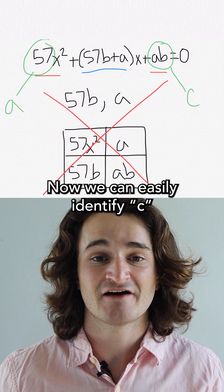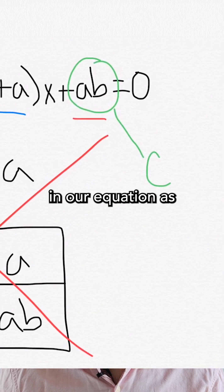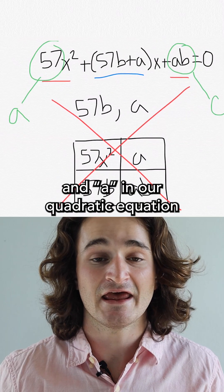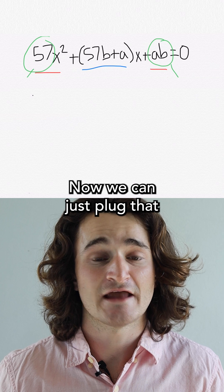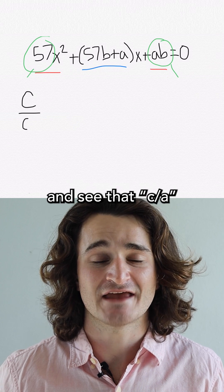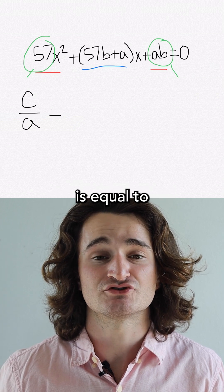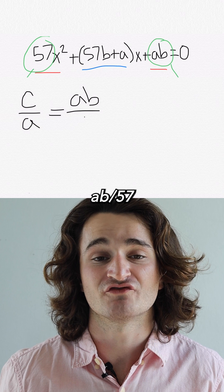Now, we can easily identify c in our equation as ab and a in our quadratic equation as 57. Now, we can just plug that into our formula and see that c over a is equal to ab over 57.